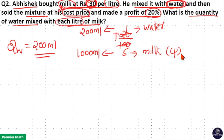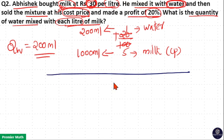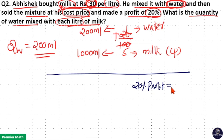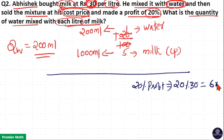Now you can do this question using a different method as well. Here, 20% is the profit, which means 20% profit is 20% of the cost price of 30 rupees. 20% of 30 is 6 rupees.